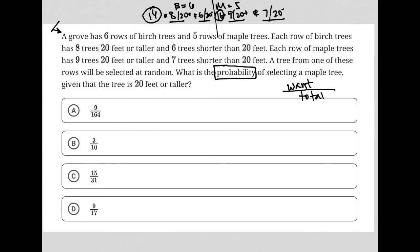A tree from one of these rows will be selected at random, so how many rows do we have? We have a total of 11 rows, but each row there are 30 trees, so I need to figure out whether the denominator is 11 or 30 times 11. I'll see if there's any clarifying information. What is the probability of selecting a maple tree given that the tree is 20 feet or taller?